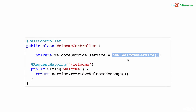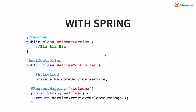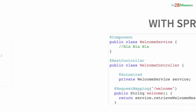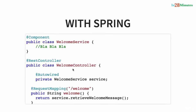Here we are inverting the control. The control of creating the WelcomeService — the control of creating the dependency — was with the bean itself. The WelcomeController was deciding when to create the WelcomeService, how to create the dependency. But now with Spring we are shifting that responsibility out to Spring. This is called inversion of control — the control moves out of the component which needs the dependency to the framework which is injecting it.